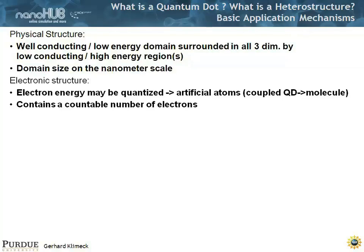It contains a countable number of electrons, not an infinite number. Here's one sort of stick diagram example of a confinement potential. Here's a lower-energy material buffered by a higher-energy material — this is a conduction band diagram, say of indium arsenide versus gallium arsenide. That's what I mean by well-conducting, low-conducting, high-energy, low-energy — it's a rather general term.